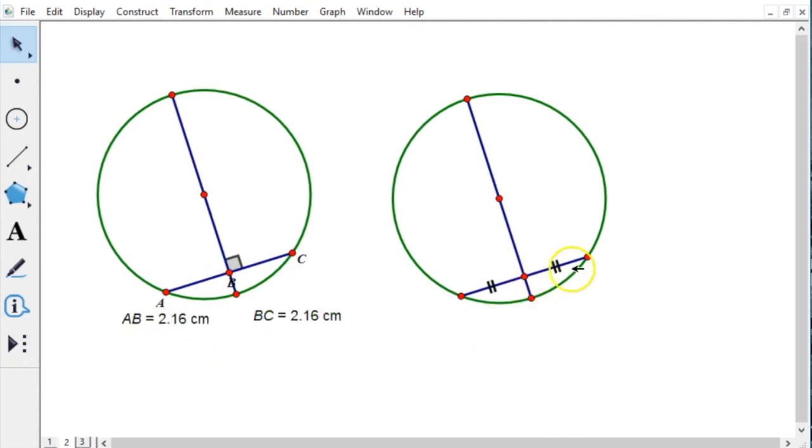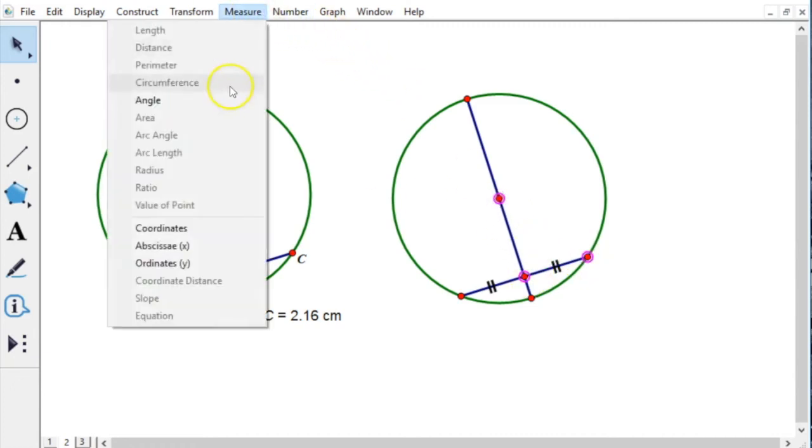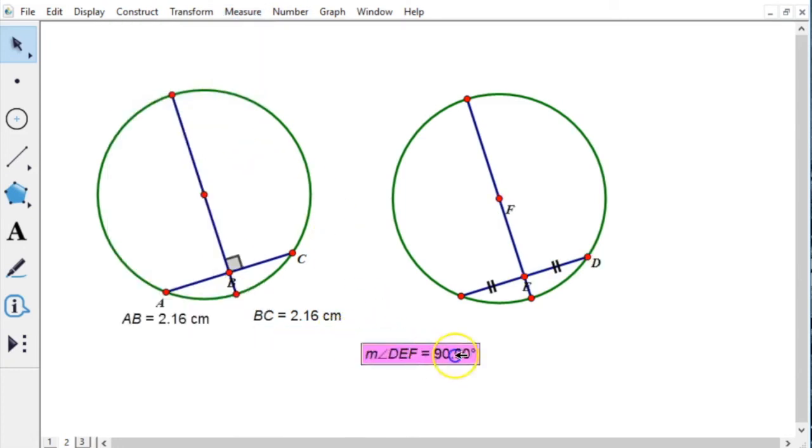Going the other way, if it's a midpoint, which this is, then it says this must be a right angle. So I could just select these three points. Oops. Select the three points. And it should, when I measure that angle, come out to be 90. Bam. It is.